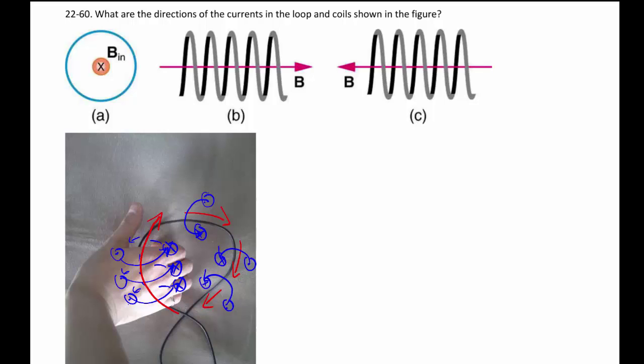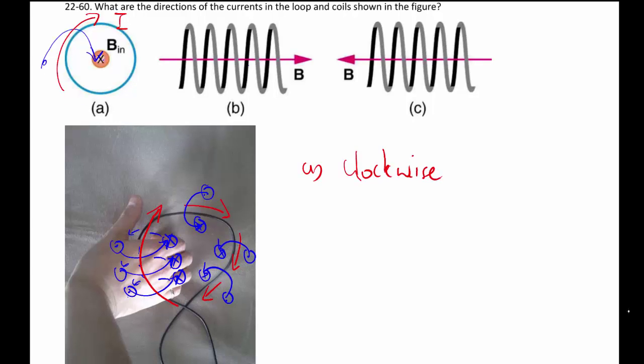So, first of all, that answers part A because the inside of the coil, B has to go inwards, like that. So you put your thumb around like in the picture and you find that the current goes this way, which we will call as clockwise.